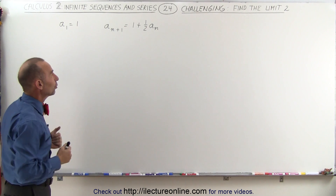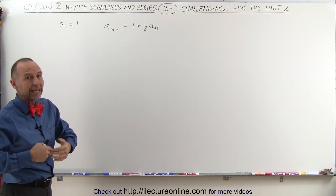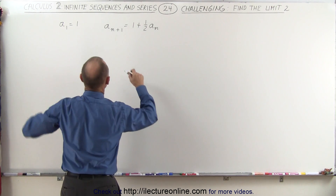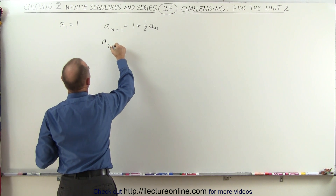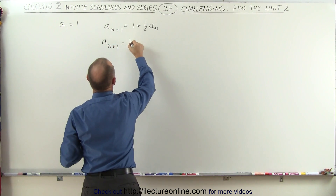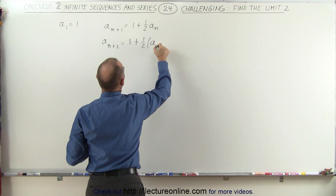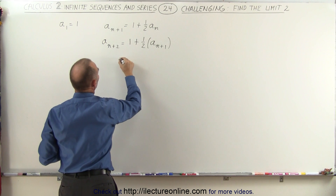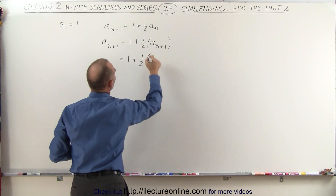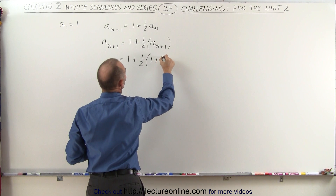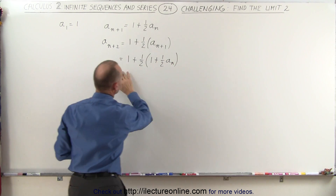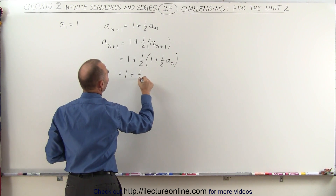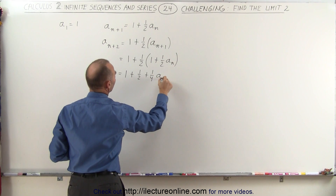Let's go down the list and find a(n+2), a(n+3), and so forth to see what this develops into. So a(n+2) is equal to 1 plus one-half times a(n+1). And a(n+1) is defined as 1 plus one-half times a_n. If we multiply this out, this becomes equal to 1 plus one-half plus one-quarter times a_n.